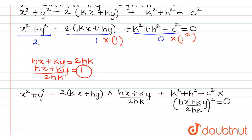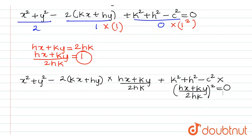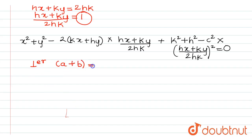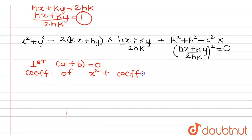So now we have done the homogenization. If you check everywhere, the degree of x and y are the same. Another condition given is that the lines are perpendicular, at right angles. So if lines are perpendicular, the condition is a plus b equals 0, that is the coefficient of x squared plus the coefficient of y squared equals 0. We are only concerned with those coefficients from the homogenized equation.